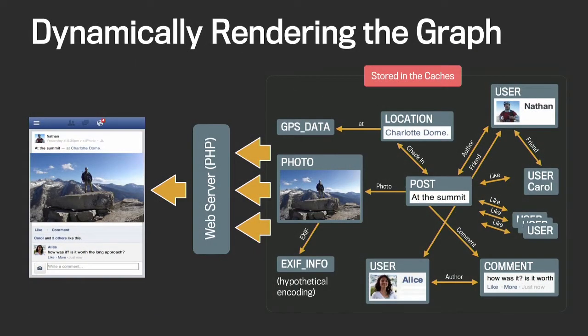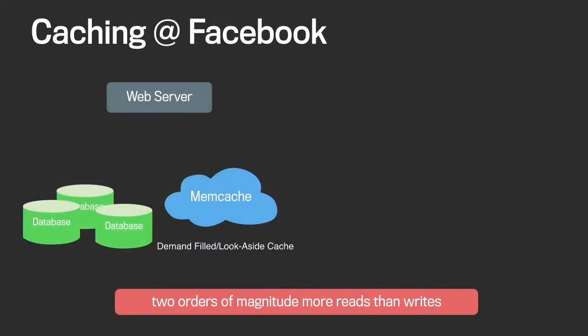The web server will fetch this data from the cache and dynamically construct the picture that you see on the site. Caching at Facebook takes on two different forms. The first one is the demand-filled look-aside cache served by memcache.